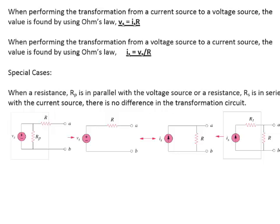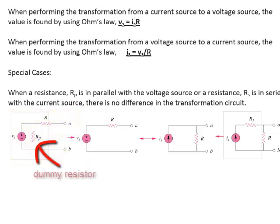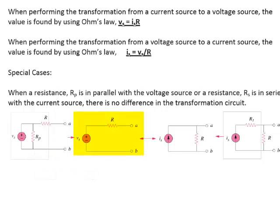Let's look at a couple of special cases. The bottom left circuit is a voltage source in parallel with a resistor RP, and then in series with R. RP is called a dummy resistor because it does not affect the source transformation, which means I can actually remove that parallel resistor and still do the source transformation. VS and RP are in parallel, so they have the same voltage. So whether it's there or not, the source transformation would still be IS in parallel with R, ignoring RP.